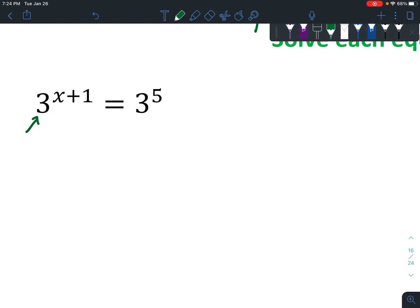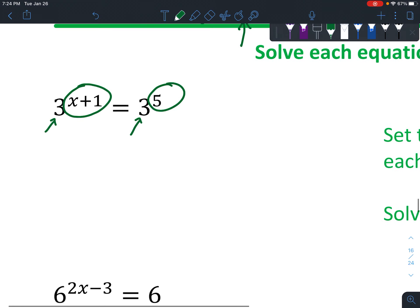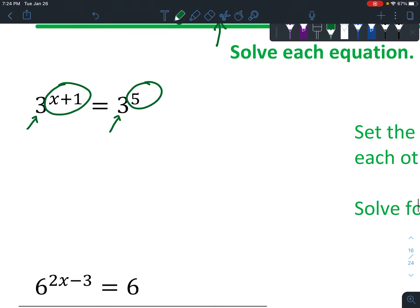Then you can say, wow, that means this has to equal this. So sometimes it's not as straightforward as just saying X equals 5. This time you set up your own little equation: x+1 = 5, and then go ahead and solve it. So X = 4.